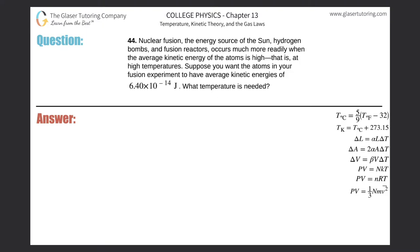Number 44, nuclear fusion, the energy source of the sun, hydrogen bombs, and fusion reactors occurs much more readily when the average kinetic energy of the atoms is high—that is at high temperatures. Suppose you want the atoms in your fusion experiment to have average kinetic energies of 6.4 times 10 to the minus 14 joules. What temperature is needed?